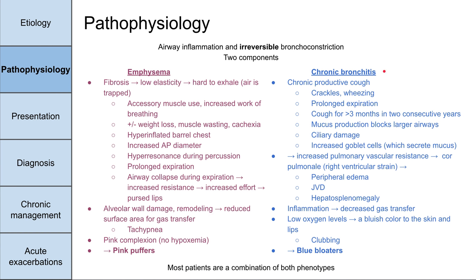In chronic bronchitis — the blue bloater picture — these people have a chronic productive cough. On exam you might hear crackles and wheezing. They also have prolonged expiration. The technical definition of chronic bronchitis is coughing for more than three months in two consecutive years. These people might have mucus production that blocks their larger airways, also trapping air in their lungs. Because of ongoing inflammation, they might have damage to the cilia, which are supposed to clear mucus. So if you have ciliary damage and mucus production, it's a double whammy.